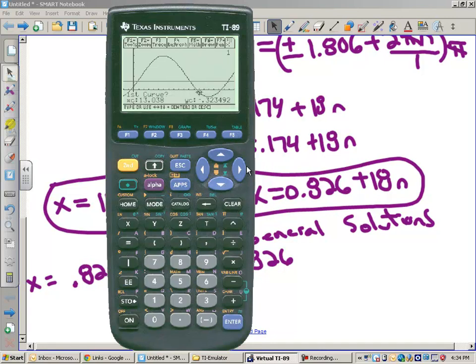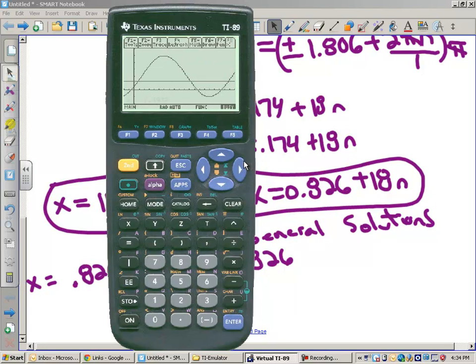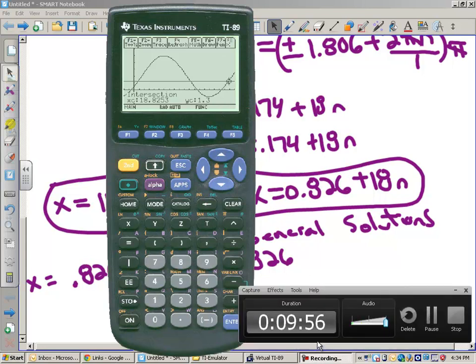And then the last one, intersection. We'll get closer to this third intersection out here. We've got first curve, second curve, lower bound. I can actually just move my cursor to the left and then to the right. And we get to 18.826.